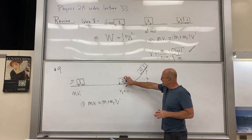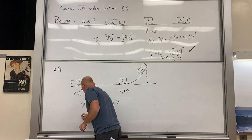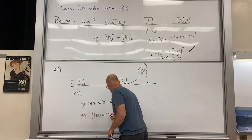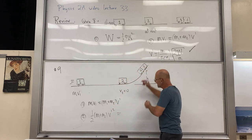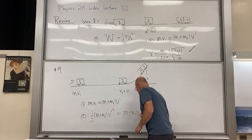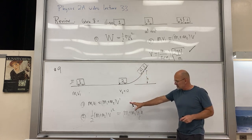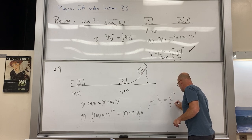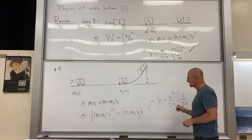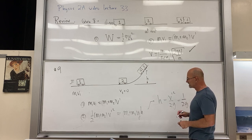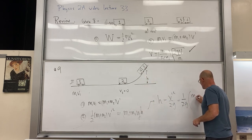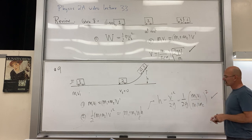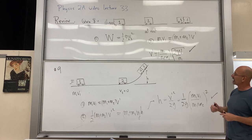After the collision, using energy conservation: ½(m₁ + m₂)v′² = (m₁ + m₂)gh. The masses cancel, giving h = v′²/2g. Substituting v′ from equation one: h = (1/2g) × [m₁v₁/(m₁ + m₂)]². That's the answer to quiz 9.